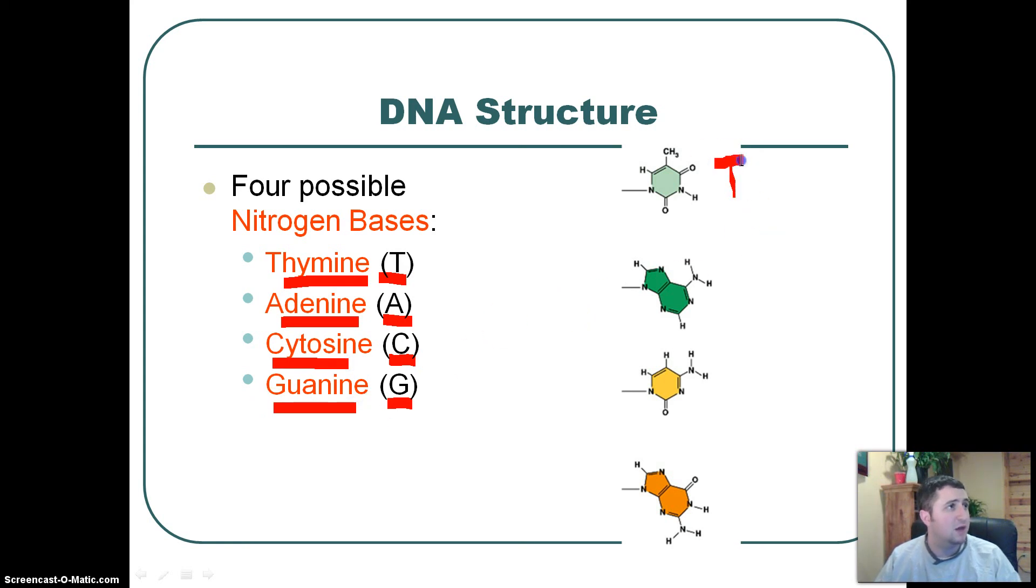This guy right here is the thymine. This guy right here is the adenine. This guy right here is a cytosine, and this guy right here is a guanine. You can see that there's a little bit of a difference in each one of these. Some of them have two of those weird shaped things, and then some of them only have one of those weird shaped things. And what's kind of interesting is that we always need two of those weird shaped things to come in contact with one of those weird shaped things. So T is always going to bind to A, and C is always going to bind to G.